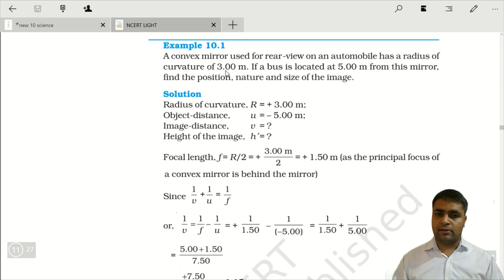Toh, jab humein radius of curvature se, hum kya nikaal lenge? Focal length, woh negative mein hogi. Or, dusra, joh u hai, woh negative mein humein pata hai. Meter mein dono hai, haan, radius of curvature bhi, or distance of object bhi. Toh, humein kya yahan pe, koi conversion toh, karna hi nahi hai. Directly, humein kya karenge? Pehle, radius of curvature, ki help se, focal length nikaal lenge.